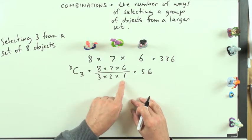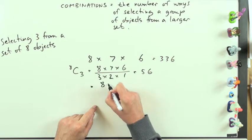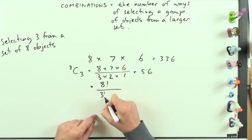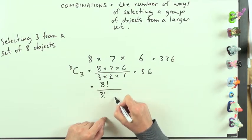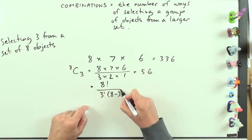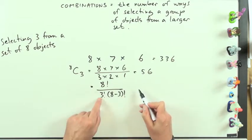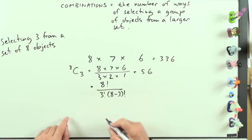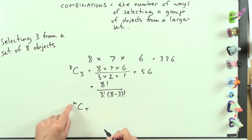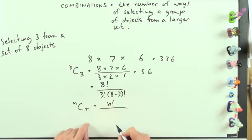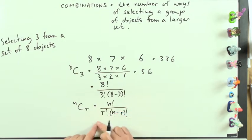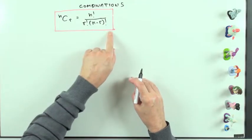How can we write this as a formula? The numerator is part of 8 factorial; the denominator has a 3 factorial (for the arrangements of the chosen group) and a 5 factorial, i.e. (8−3)!, for the remainder. So 8C3 = 8! / (3! × 5!). In general, nCr — the number of ways of choosing r objects from n — equals n! / (r! × (n−r)!). That is the formula for combinations.